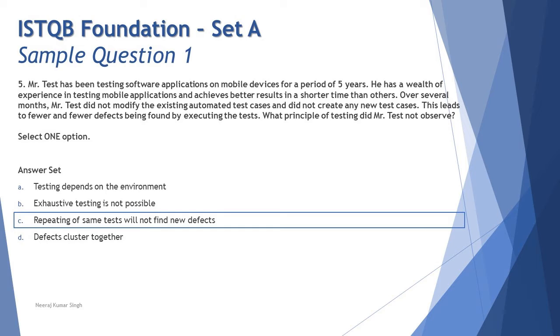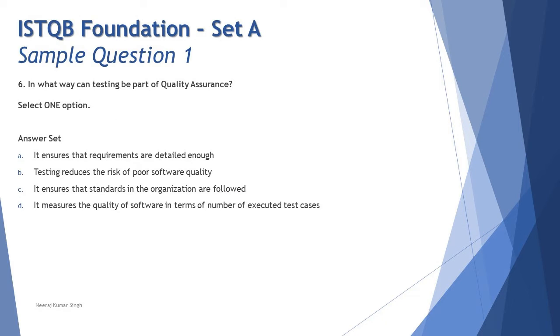Moving into the next question here, question number six: In what way can testing be part of quality assurance? Now quality assurance is something which really has to be understood and remembered from our past experience. If you tell me the difference between quality control and quality assurance, QA is more like managing things, defining the parameters, and QC is more like controlling the activities. If you generally look into quality assurance, it really adds more value from the point of defining the parameters what you really need to have.